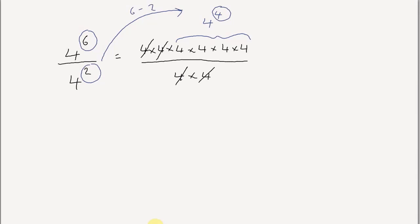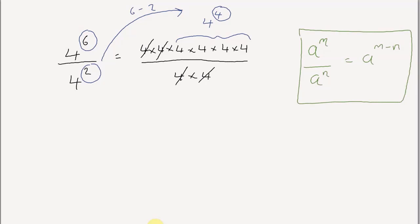That is the second rule. Generalizing with algebra: a to the power of m divided by a to the power of n equals a to the power of m minus n. Let's put that in a box. Another example: five to the power of seven divided by five to the power of three equals five to the power of seven minus three, which is five to the power of four.